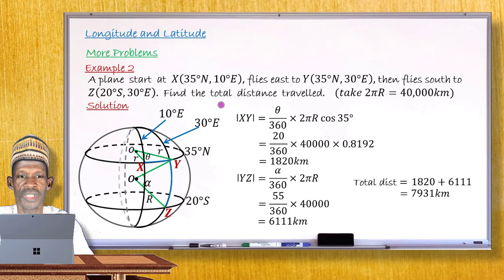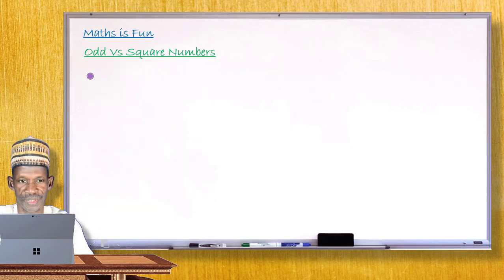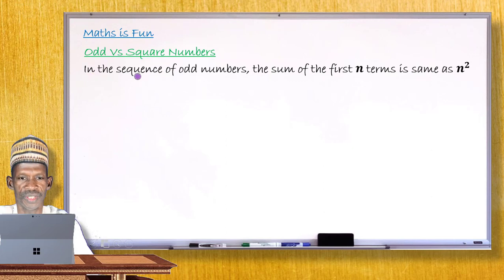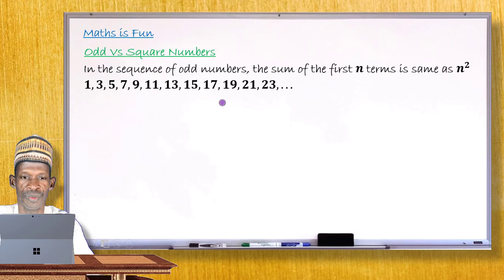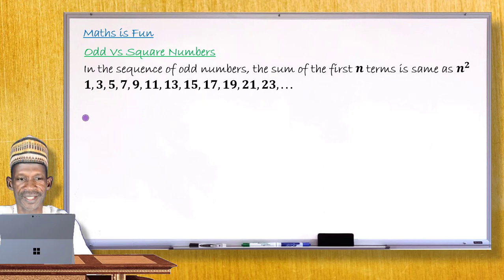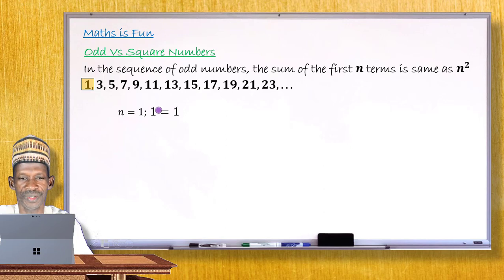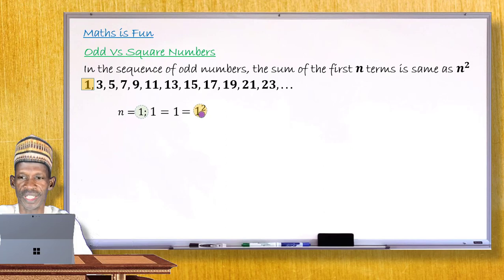In the sequence of all odd numbers — 1, 3, 5, 7, and so on — the sum of the very first n terms equals n². Taking n = 1: the sum is just 1, and 1 = 1². Taking n = 2: 1 + 3 = 4, and 4 = 2². You can see that summing the first n odd numbers gives n².